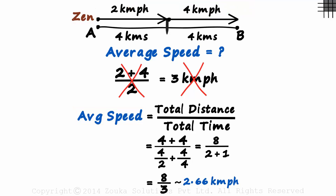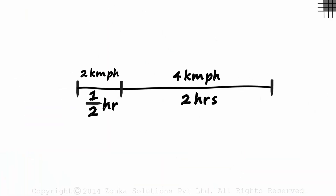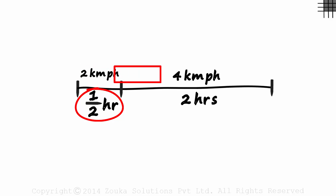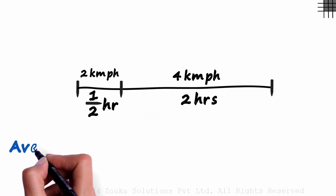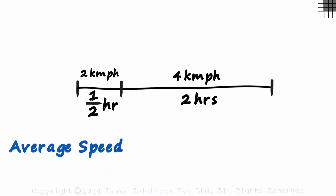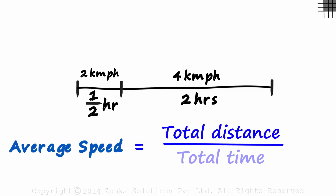Now let's look at a new example. Zen travels at 2 kilometers per hour for half an hour, and then at 4 kilometers per hour for 2 hours. What will be his average speed? Pause the video and give it a shot. We just learned that the average speed equals the total distance divided by the total time taken to travel that distance.